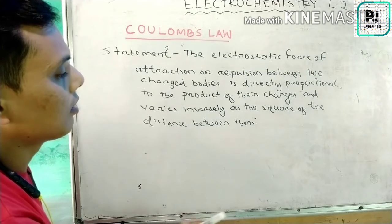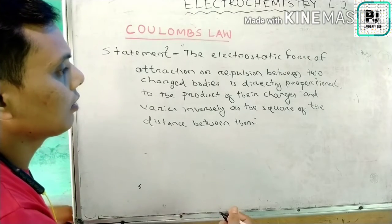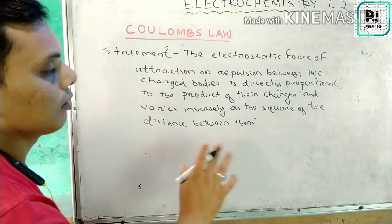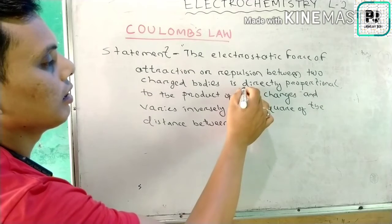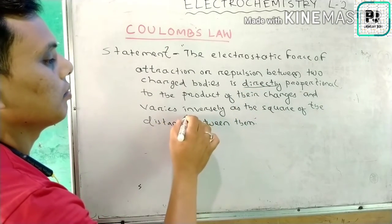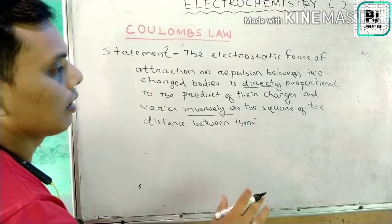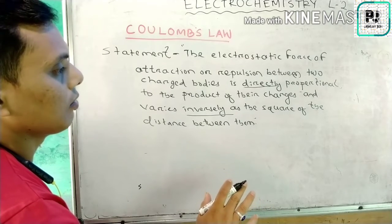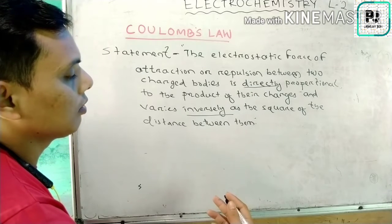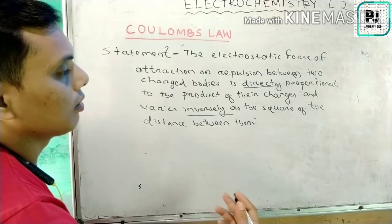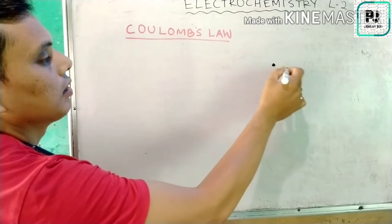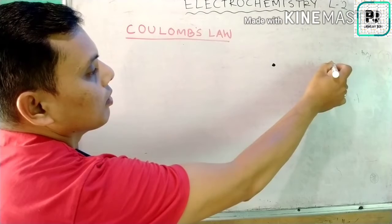Now let's look at this mathematically. One relationship is directly proportional and another is inversely proportional. The force of attraction is directly proportional to the product of the charges, and inversely proportional to the square of the distance between them. Suppose we take two point charge bodies.